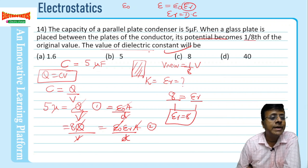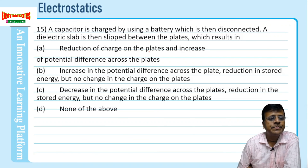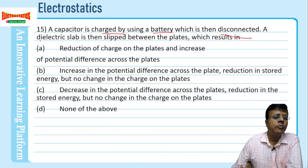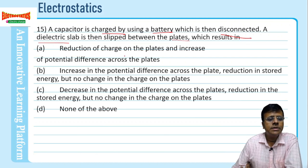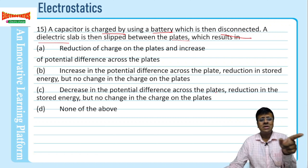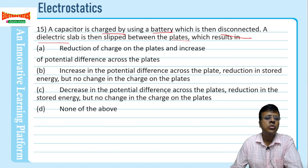Problem 15: A capacitor is charged using a battery and then disconnected. Then a dielectric slab is inserted between the plates. The options discuss reduction of charge, increase of potential difference, decrease of potential difference, and reduction of stored energy. Taking a gist: they are talking about charge, potential difference, and energy — let me find those values.